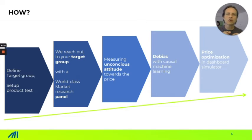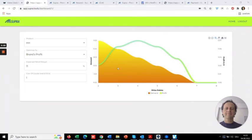This then goes to a post-processing stage with causal machine learning, and you can enter and revisit the results in a pricing optimization dashboard.